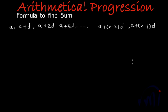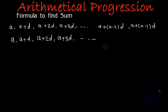One way of writing this series is this. Another way is if I write the last term as L. This series can be written as A, A plus D, A plus 2D, A plus 3D, and the last term L. The term before the last can be written as L minus D. In the last video we found the formula for the last term, written as the nth term. Since this series has only N terms, this last term can be called L.